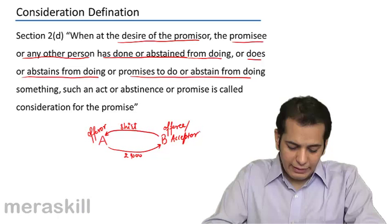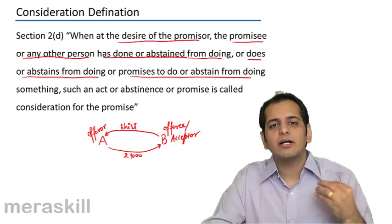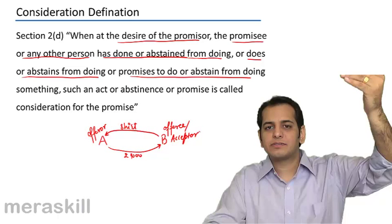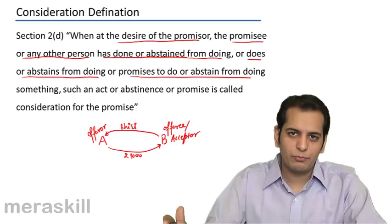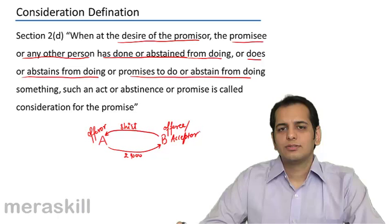Please remember that when any person — A in our case — makes an offer, he becomes the offerer. The counterparty, that is B, becomes the offeree. And when B accepts, his position elevates and he becomes an acceptor because he has accepted the proposal or the offer. So A is the offerer, B is the offeree or the acceptor.